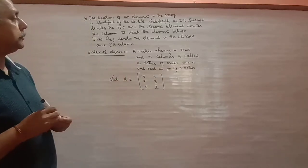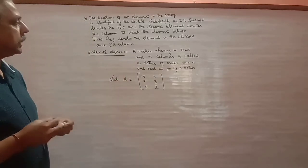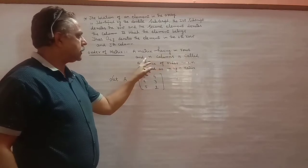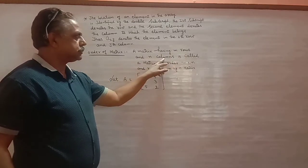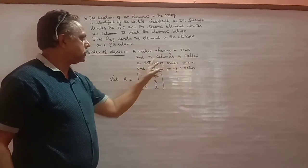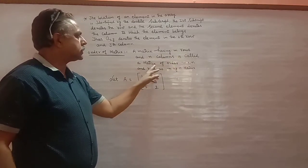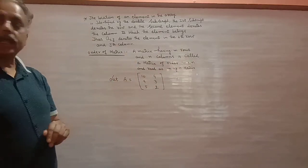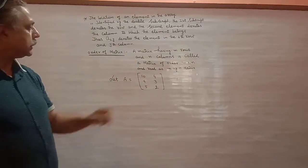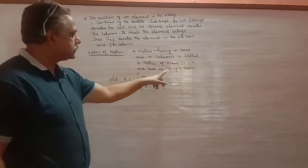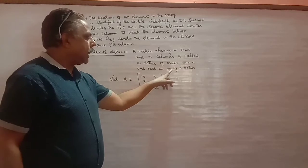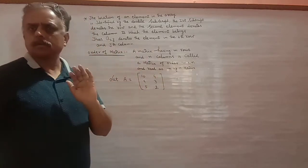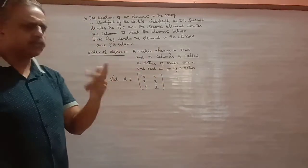A matrix having M rows and N columns is called a matrix of order M cross N. इसको हम M by N matrix या simply M cross N matrix पढ़ते हैं।